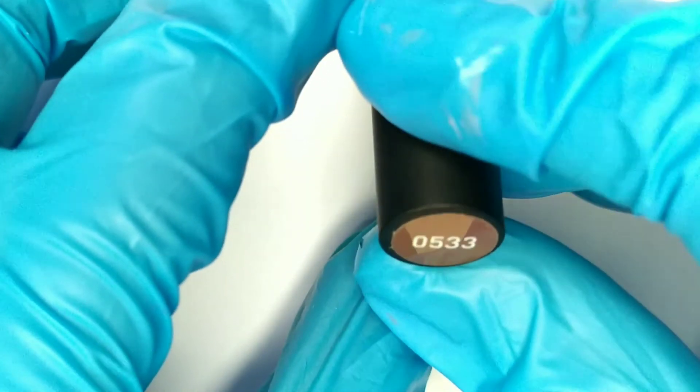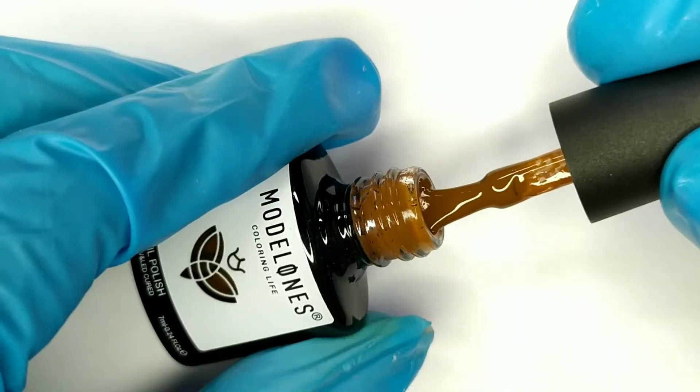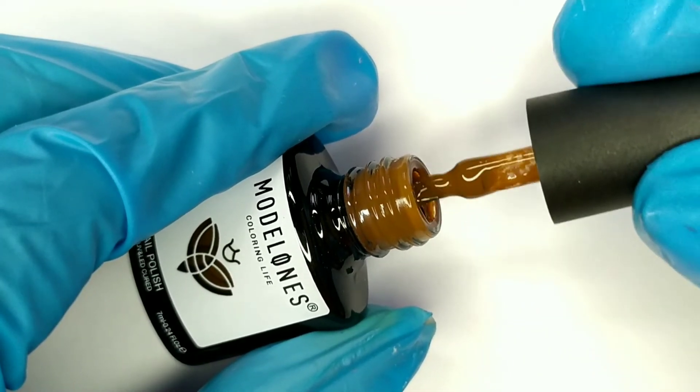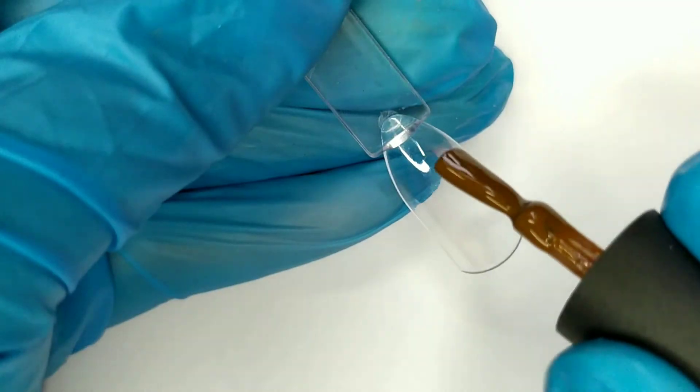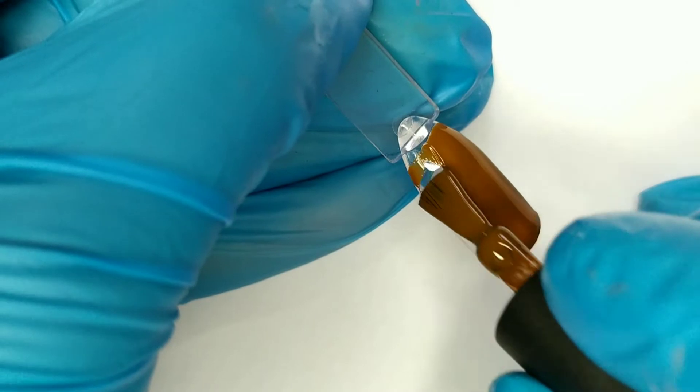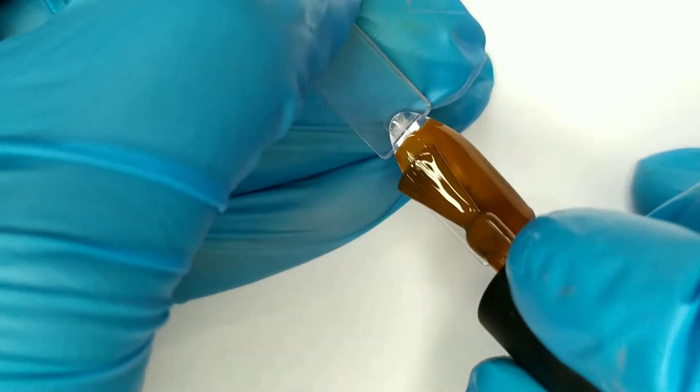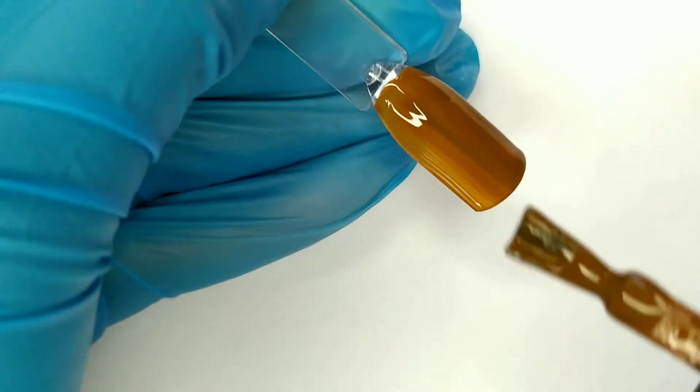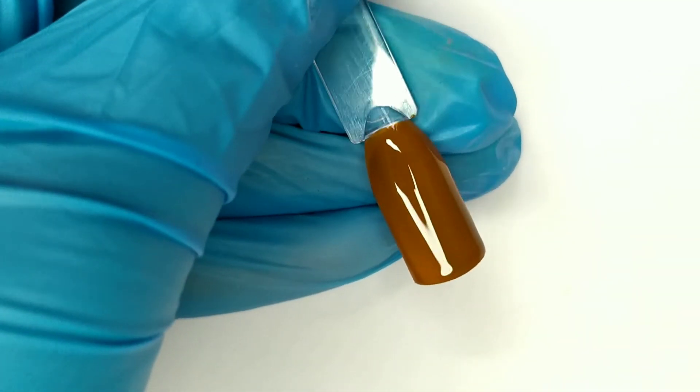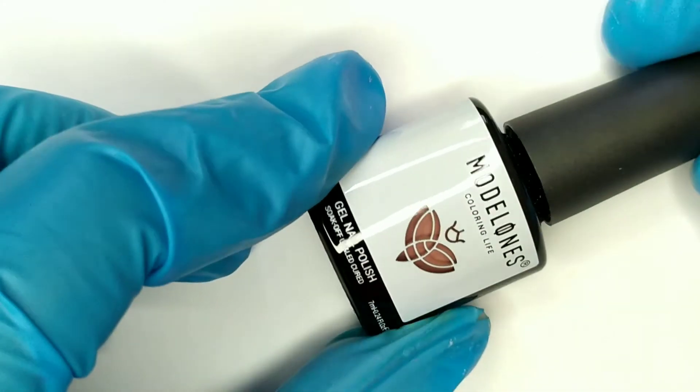The next shade is number 0533. It's kind of a dark brown color, perfect for Halloween or for fall season. This shade would be pretty good to use - you can create amazing autumn nails with this one. You can see that it's dark brown and gives you full coverage in just one coat.